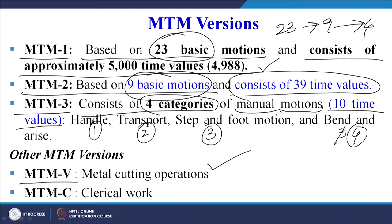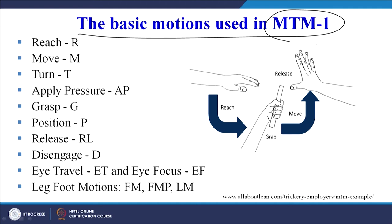There are other MTM versions as well, like MTM 5 for metal cutting operations or MTM C for clerical work. Our target is to identify the work for which we want to find the standard time at a desired level of performance using the standard method — and work is not done only on the shop floor but in all spheres of life, including office spaces. These are the different MTM versions. The basic motions used in MTM 1 are also explained with examples.